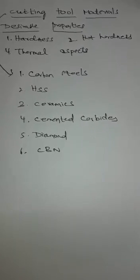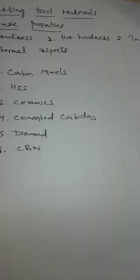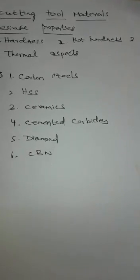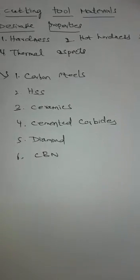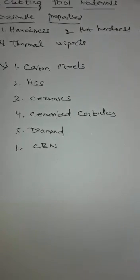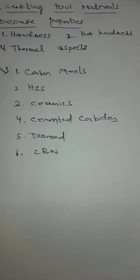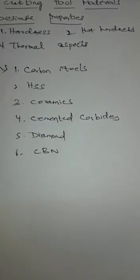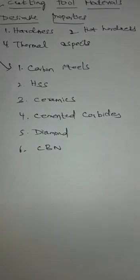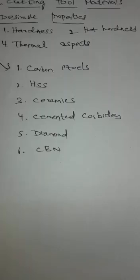Here I listed a few properties: hardness, hot hardness, toughness, and some thermal aspects. Hardness, as you know, deals with the ability to cut the workpiece. The workpiece material should be less hard than the cutting tool material.